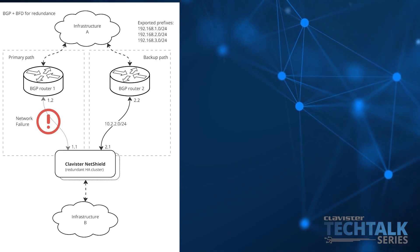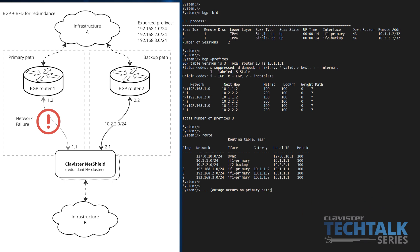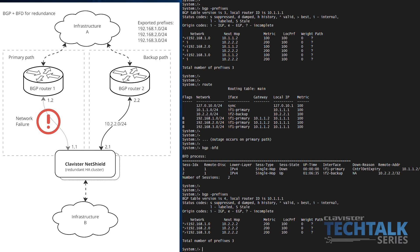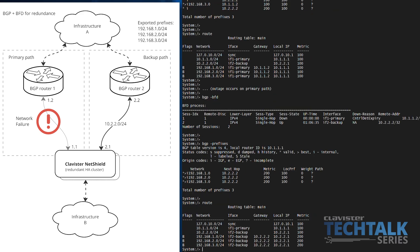We have now blocked all network traffic over the primary path to simulate an outage. With current BFD settings, the NetShield BGP engine should notice this within half a second and reroute traffic over the backup path instead. Looking at BFD status again, it now shows that the system has detected the failure and declared the session towards router 1 over the primary path to be down. As a result, all BGP prefixes pointing over the primary path have disappeared, and this change has been reflected in the routing table — the previous dynamic routes have been removed and replaced by corresponding routes over the backup interface with BGP router 2 as gateway.